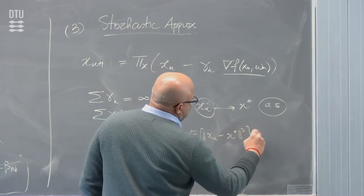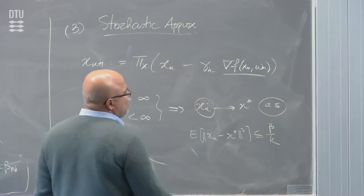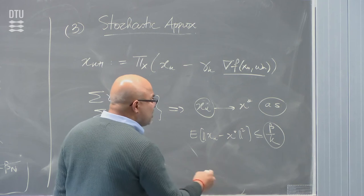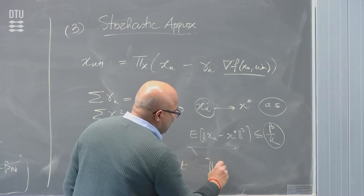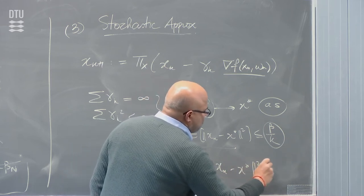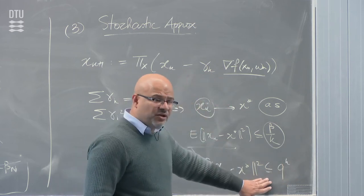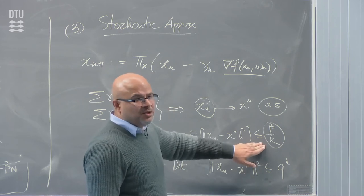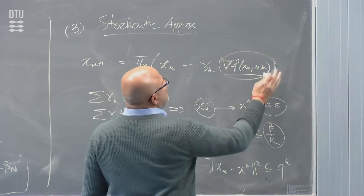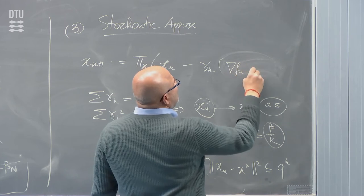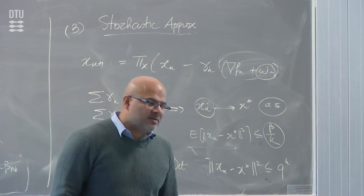With stochastic approximation you get a sublinear error bound, which is much worse than what we had in the deterministic world. For deterministic problems we had ||x_k - x*||^2 less than Q^k — a linear convergence rate. For stochastic problems it becomes much, much poorer. That's just the reality of dealing with noise: the sample gradient can be viewed as the true gradient plus some noise, and this noise slows down the process.